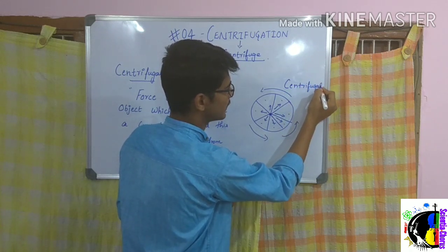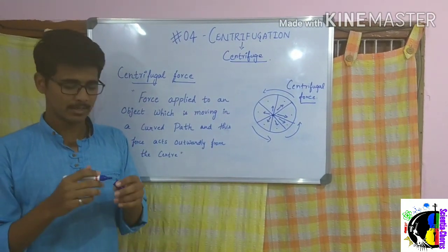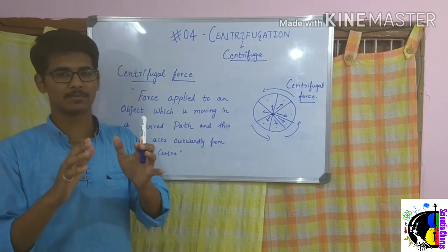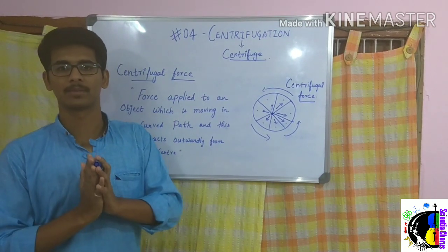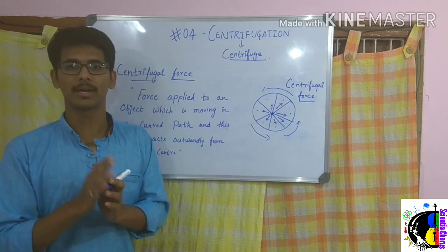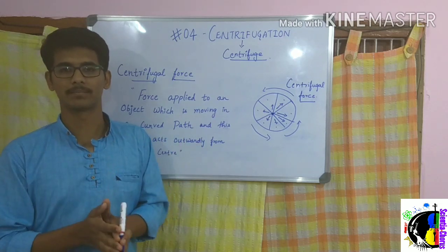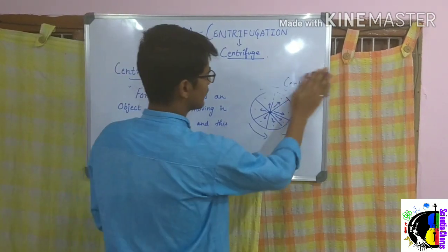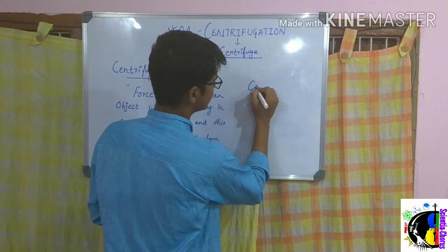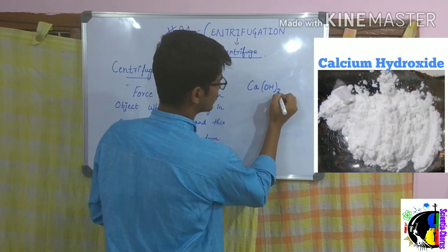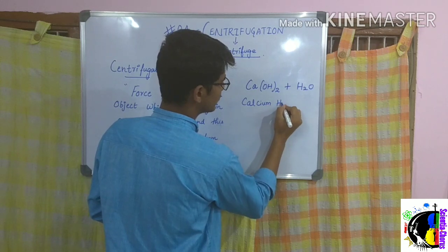This same centrifugal force is used to separate the components of a mixture. Let us take a specific example — calcium hydroxide solution. Calcium hydroxide, Ca(OH)₂, is a solid which is mixed with water to get calcium hydroxide solution. This is the mixture we are working with.